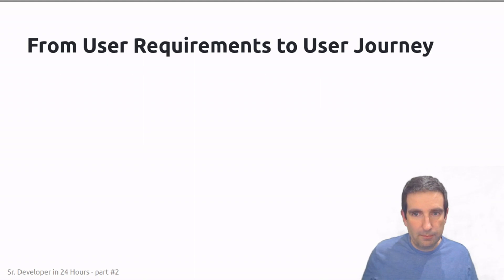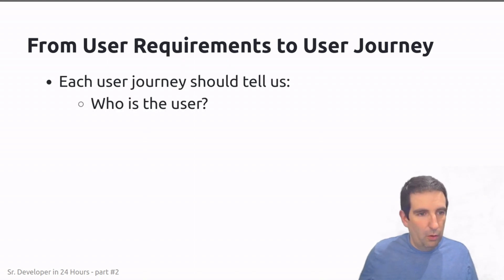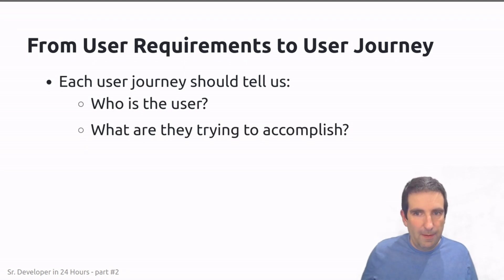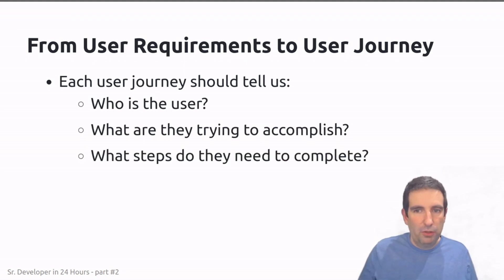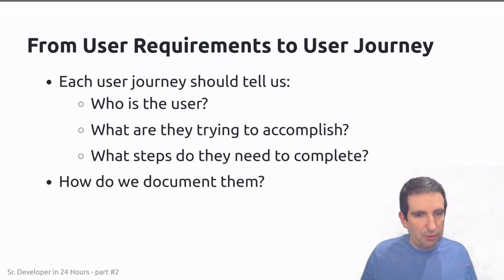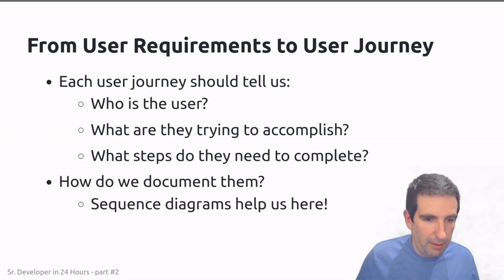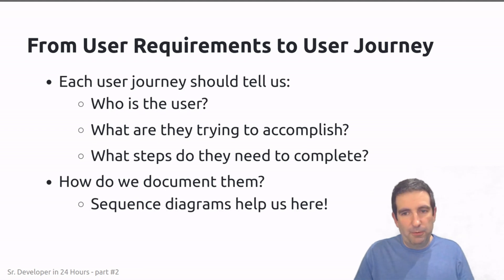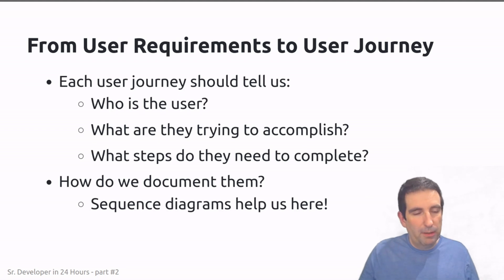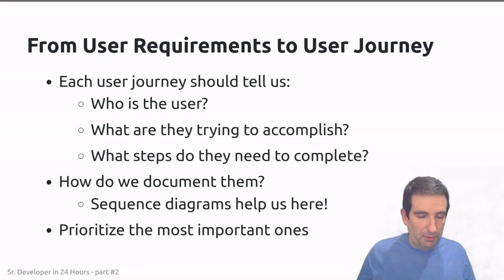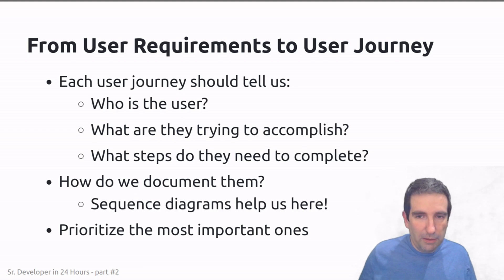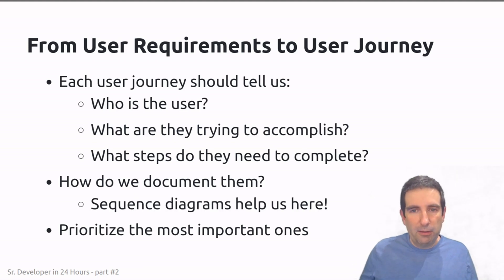We want to document user journeys somehow. In my opinion, sequence diagrams are a good way to do this. Once things are properly documented and organized, we can prioritize the most important ones as we move into the next section. But before we jump to epics, let's go into something more practical: sequence diagrams. A sequence diagram is a type of UML diagram that helps document the interactions between different components.